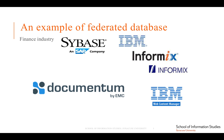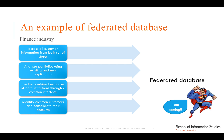They may both have one or more document management systems such as Documentum or IBM Content Manager for storing text documents such as copies of loans. After the merger, they need to access all customer information from both sets of stores, analyze their new portfolio using existing and new applications, and use combined resources of both institutions through a common interface. They need to identify common customers and consolidate their accounts, although the different companies may have referred to their customers using totally different identifying keys. Federation technology can significantly ease the pain in this situation by providing a unified interface to diverse data.